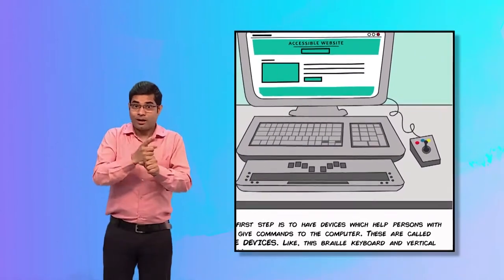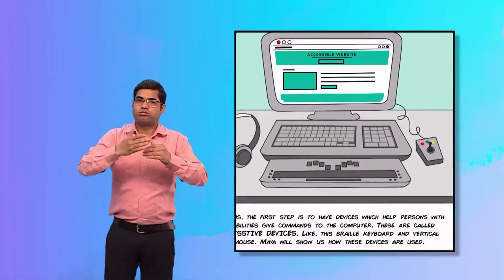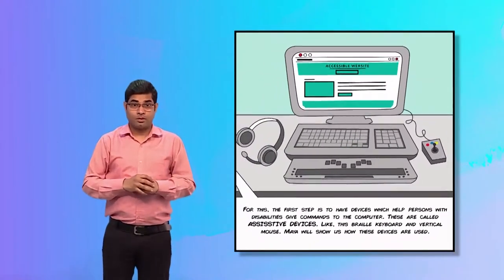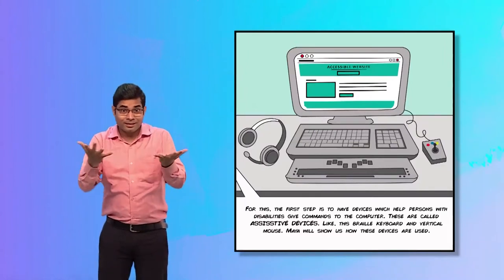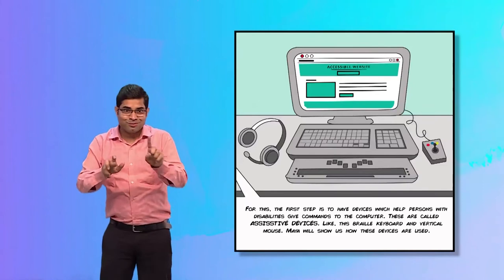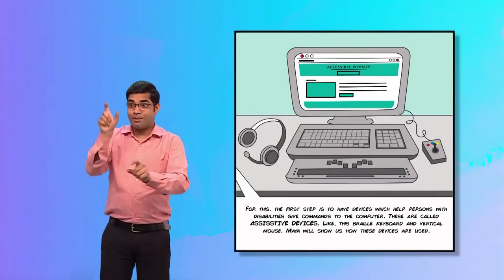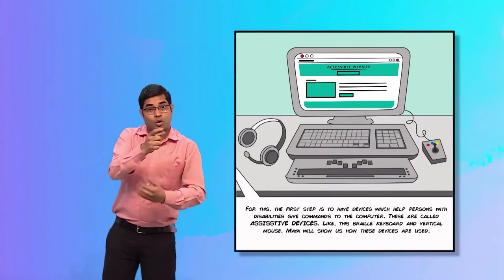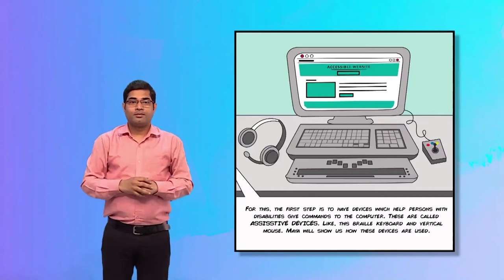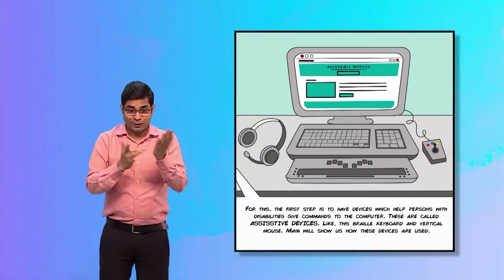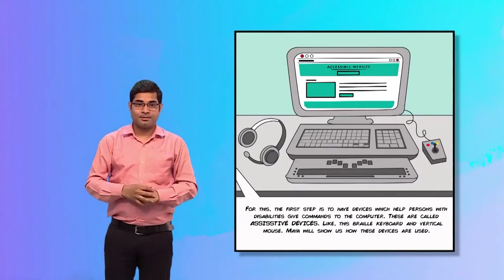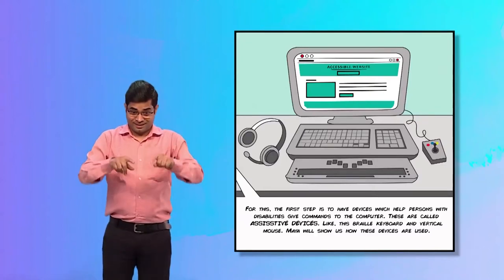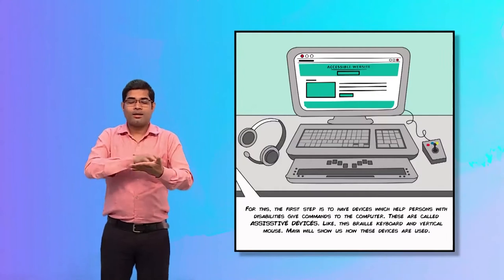Jyothi Ma'am continues explaining. Well, for this, the first step is to have devices which help persons with disabilities give commands to the computer. These are called assistive devices, like this braille keyboard and vertical mouse.